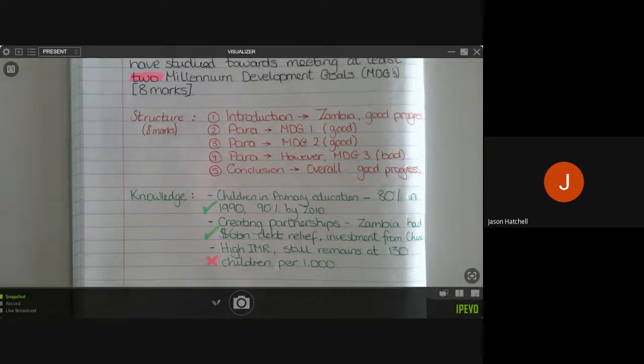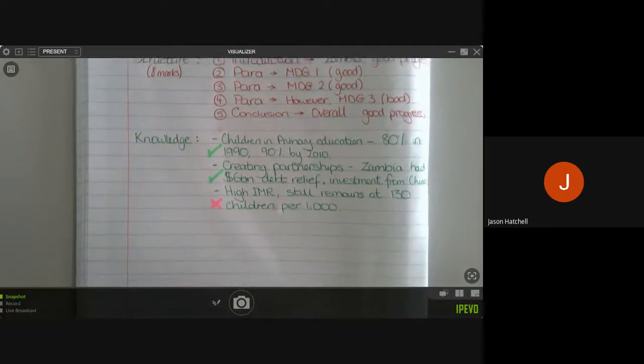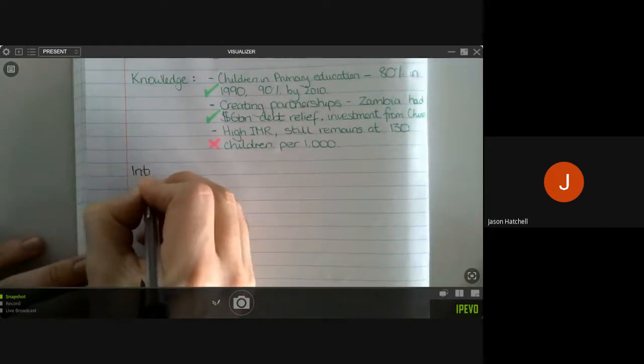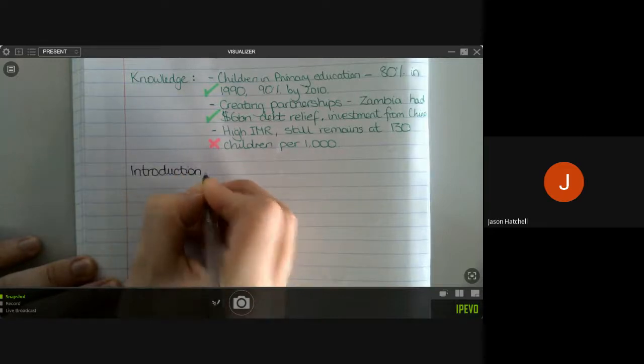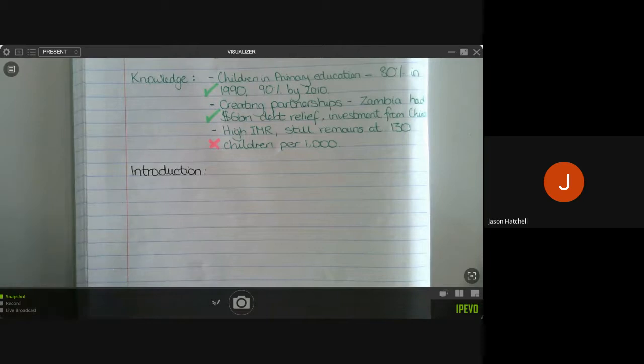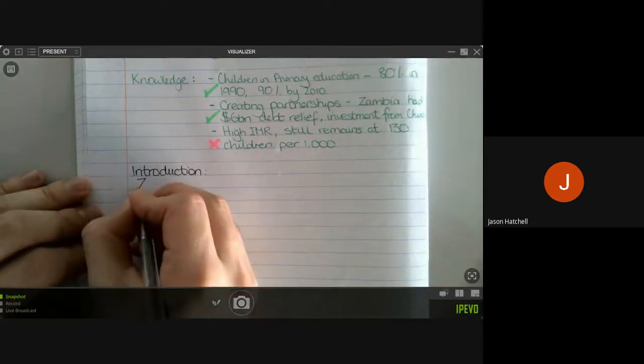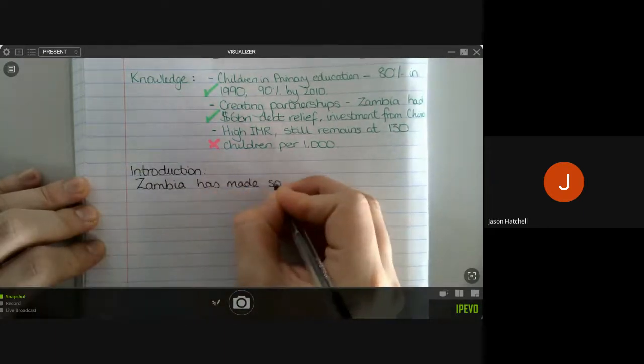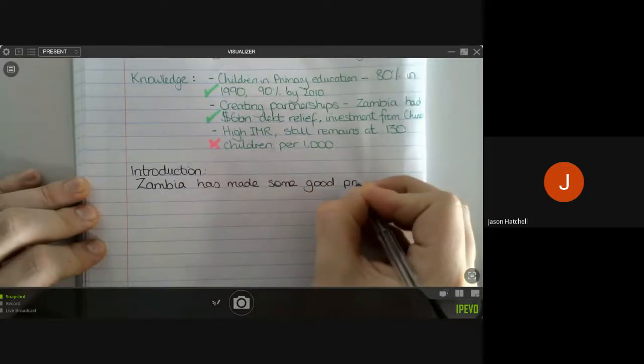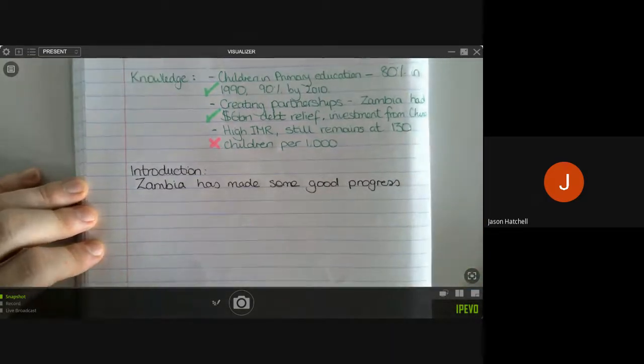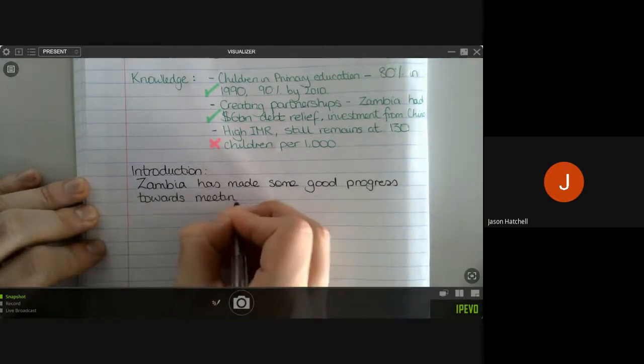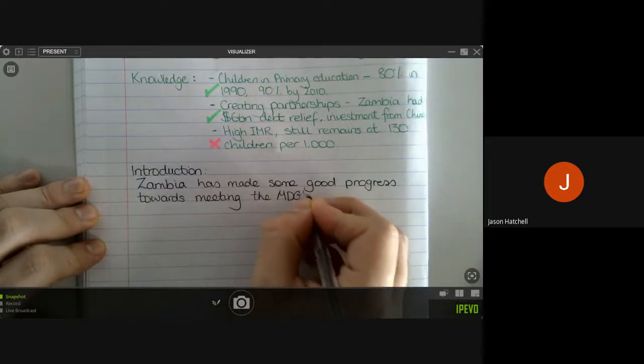So what we're going to do is we're going to start underneath now with the introduction. So I'm going to label each of the paragraphs so you know exactly what we are looking at. So let's start with the introduction. And the aim of the introduction, of course, is to name our case study and say overall whether there has been good achievements or not. So we can start by saying our case study is Zambia, and we can say that it has made some good progress, and we know that because of the three Millennium Development Goals above. So it has made some good progress towards meeting the Millennium Development Goals.